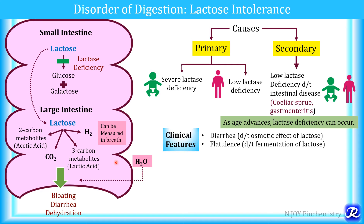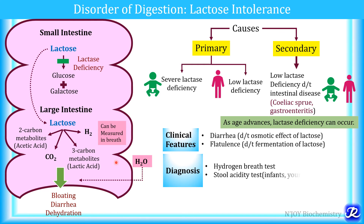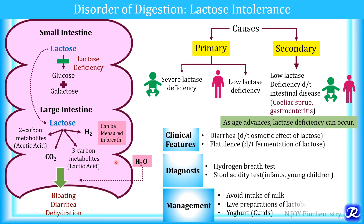Diarrhea is due to the osmotic effect of lactose — because lactose is osmotically active, it draws water inside and this water is excreted, resulting in diarrhea. Flatulence is due to the fermentation of lactose. This condition can be diagnosed by the hydrogen breath test, because hydrogen is formed by fermentation of lactose and can be measured in the breath. A stool acidity test can be done in infants and young children, as acetic acid and lactic acid can be measured in the stool.